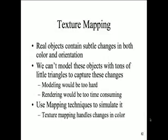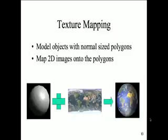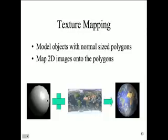So we use texture mapping to simulate it — texture mapping handles changes in color. Here's an example where we have a model with normal-size polygons, and then we map a 2D image onto the polygons. We take this picture and map it onto this surface, and then we get a model with more realistic coloring and shaping. The other thing is we might have some imperfections, inconsistencies, or detail we can't show polygon by polygon, that we can show more realistically with an image. So it adds a little bit more realism overall.